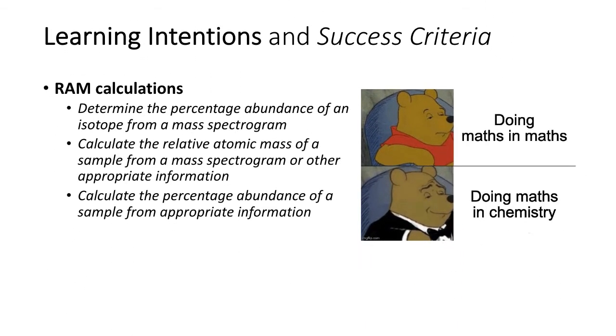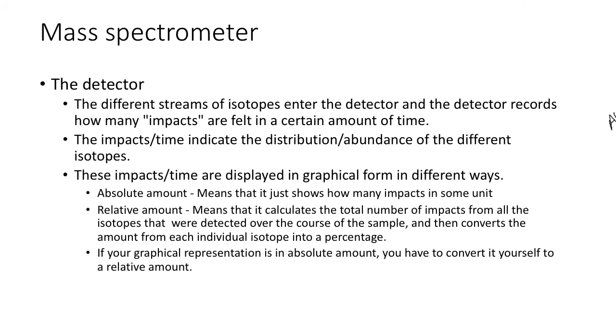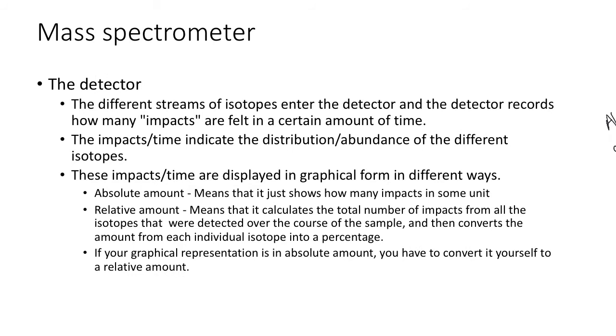We're going to be determining a whole bunch of stuff doing maths in chemistry. So last video we talked about the mass spectrometer and the detector which detects the stream of isotopes that go into it and can tell you how many of each different isotopes there are. So it displays this information in a graphical form. And this graphical form is two types: there's an absolute amount and then there's a relative amount.